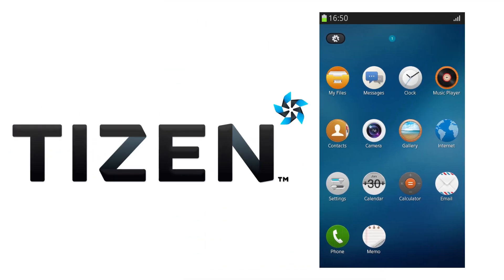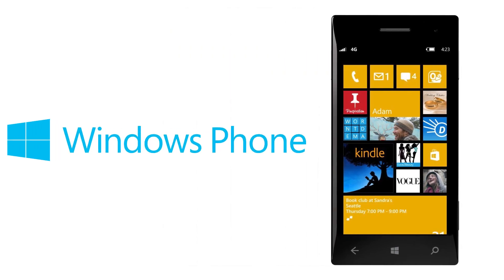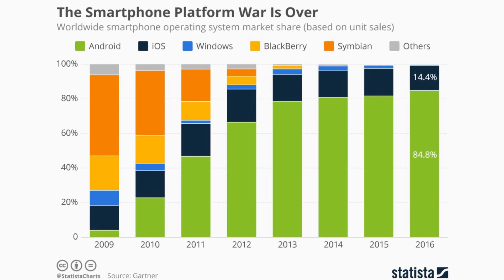Another operating system is Tizen. Windows Mobile is also a mobile OS. In the case of BlackBerry OS, the Nokia phone used Java and Symbian OS. Android is a mobile OS, and in the case of Microsoft, the Windows Mobile operating system is a mobile OS.